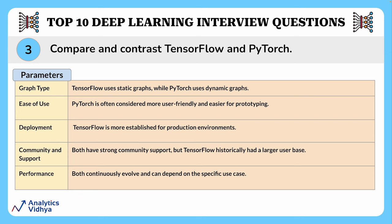The second parameter is ease of use — PyTorch is often considered more user friendly and easier for prototyping. Third parameter is deployment — TensorFlow is more established for production environments. Fourth parameter is community and support — both have strong community support, but TensorFlow historically has had a larger user base. Finally, the last parameter is performance — both continuously evolve and can depend on the specific use case you are working on.